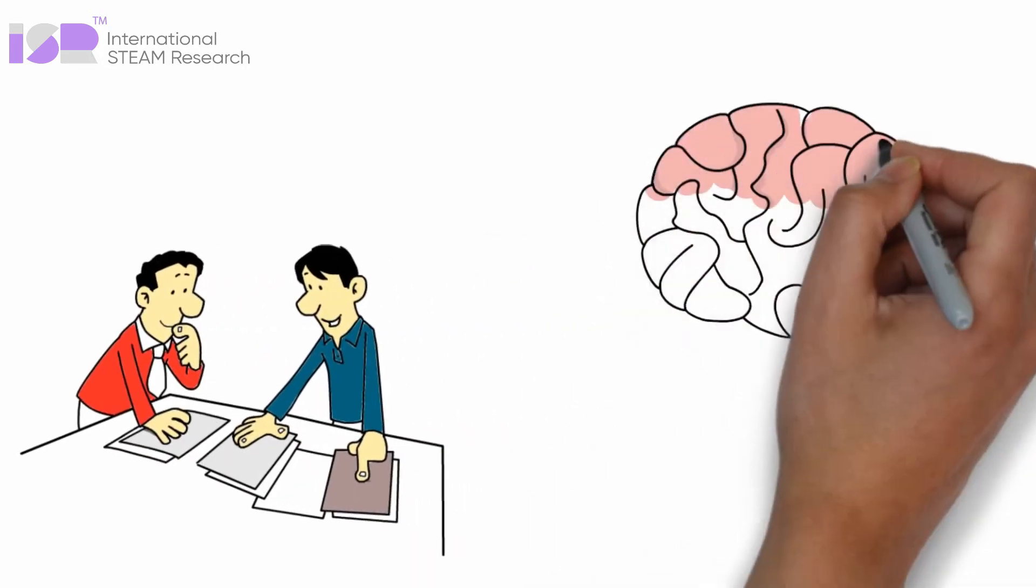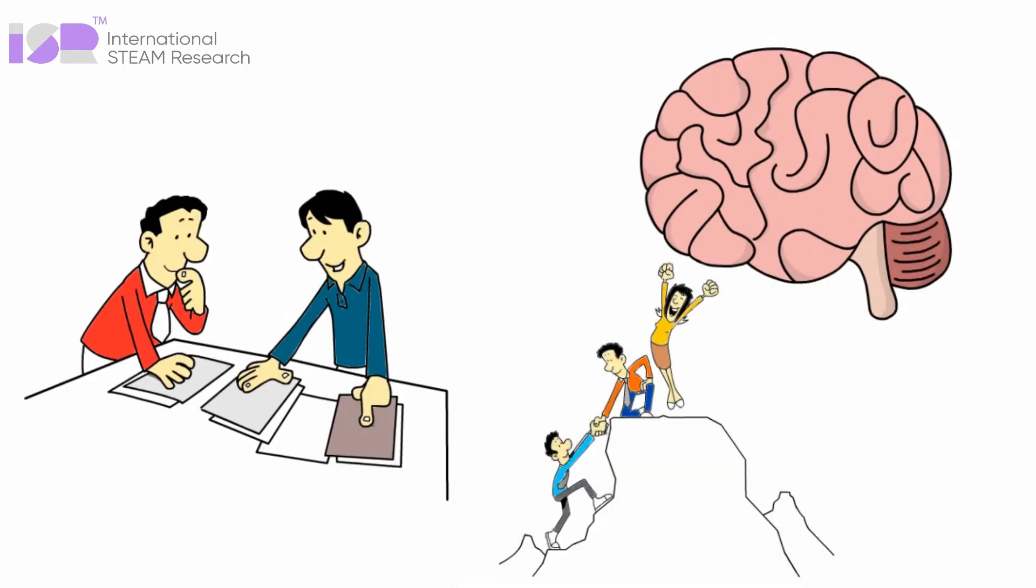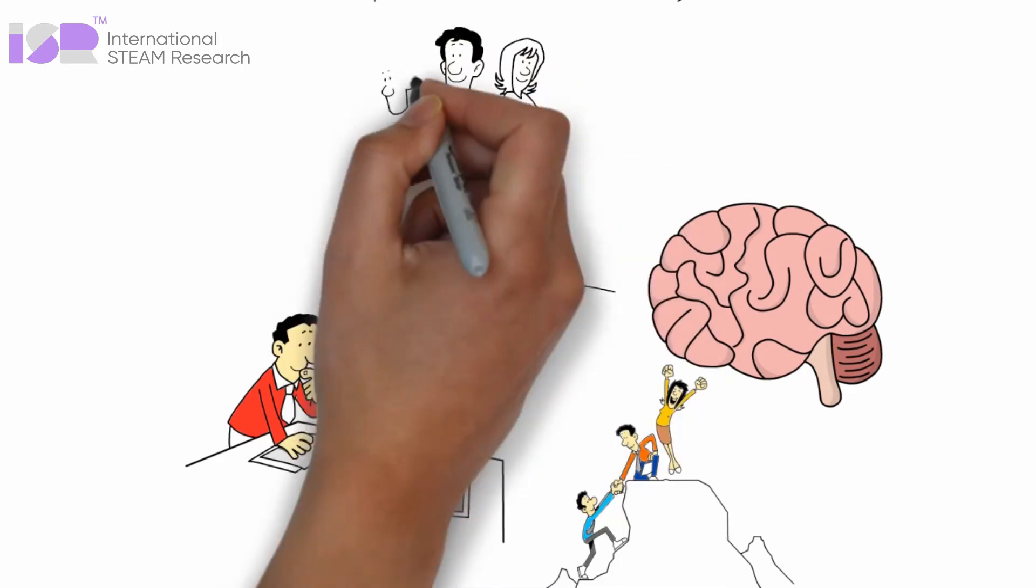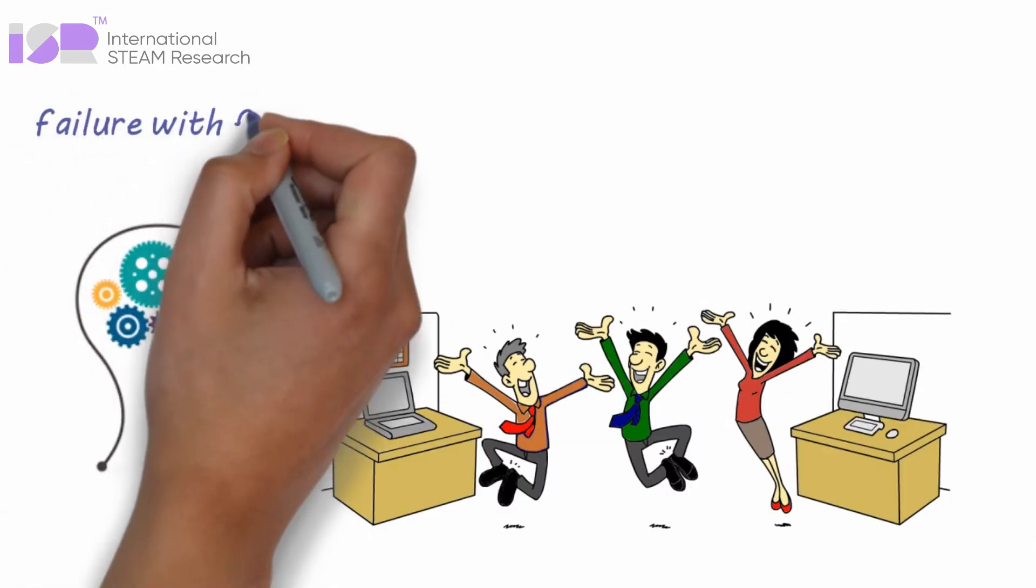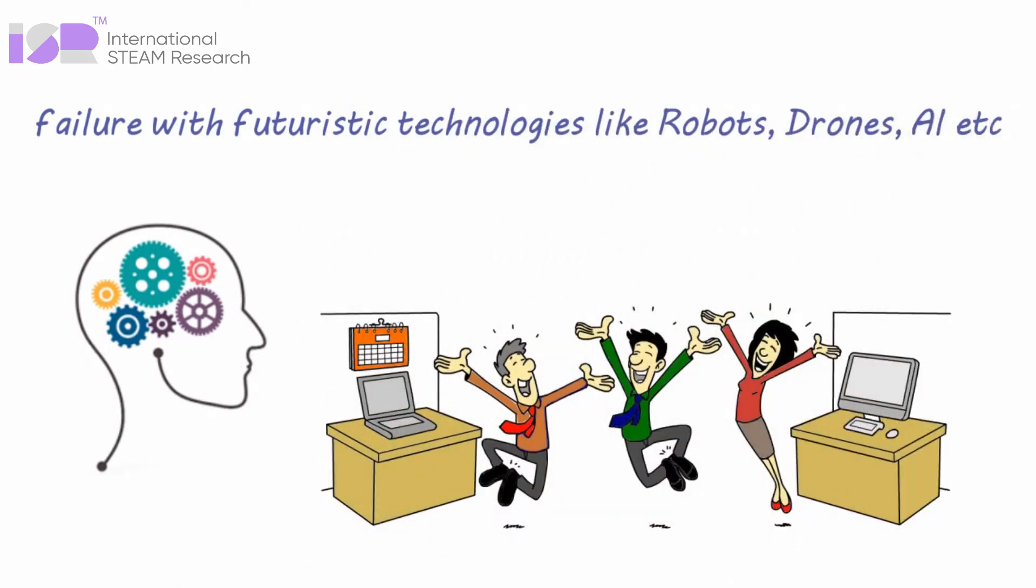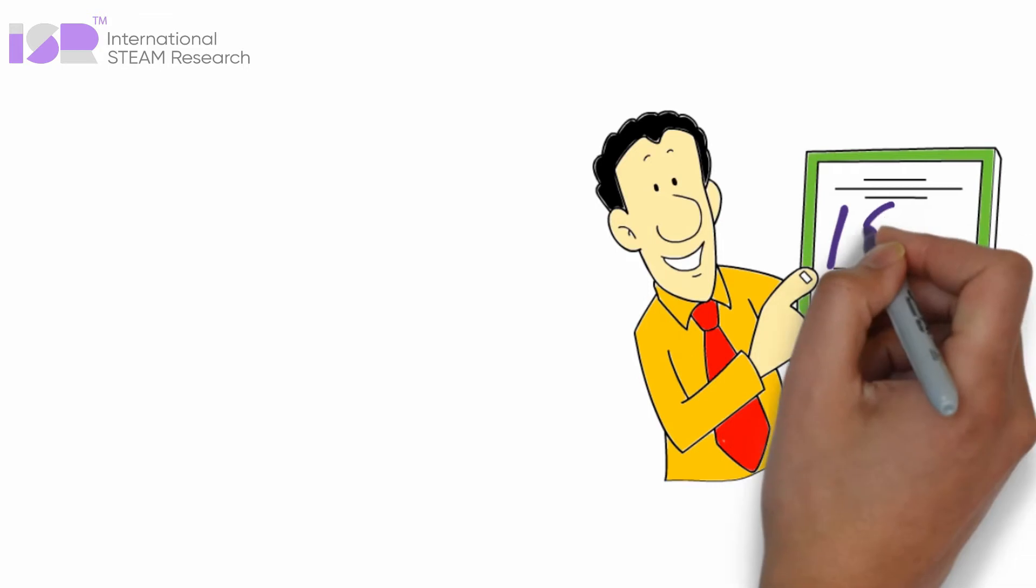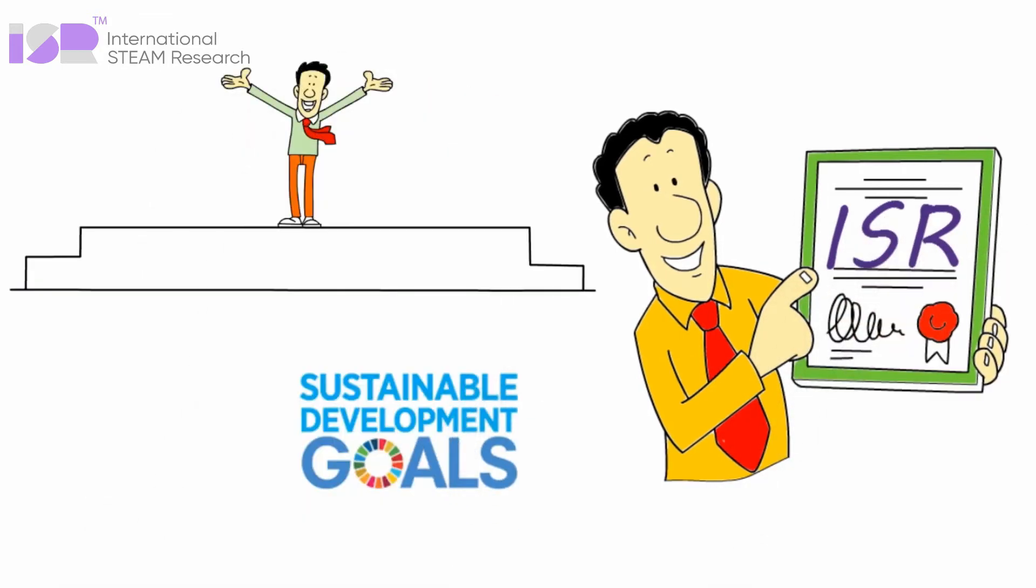Research studies on neuroplasticity prove this helps students to improve their cognitive skills. Students will improve language and thinking skills, including processing speed, memory and attention. Students will have the freedom to explore without the fear of failure, with futuristic technologies like robots, drones, AI, etc. By partnering with ISR, your school will be contributing to the sustainable development goals of the United Nations.